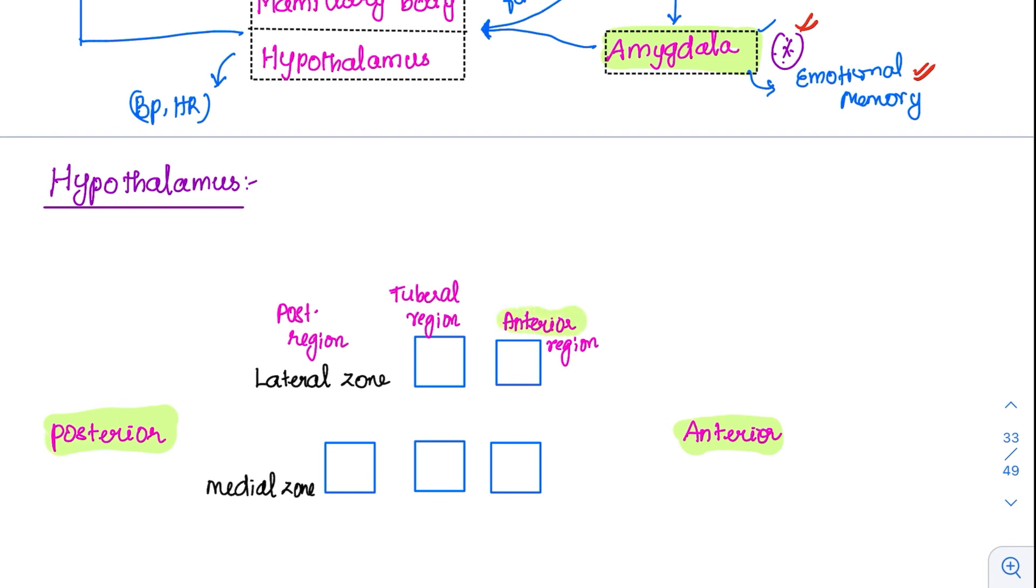In that they have three regions: anterior region, tuberal region, and posterior region. These regions are further divided into lateral zone and medial zone. The posterior region has only medial zone but the other two areas have lateral zone as well as medial zone. But we don't have to remember all of this. We have to remember specific nuclei's functions.